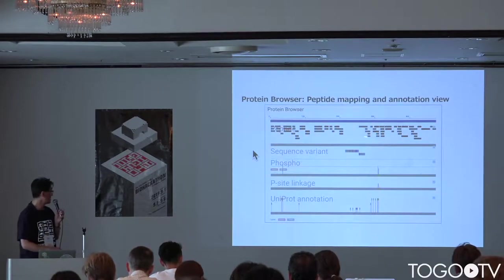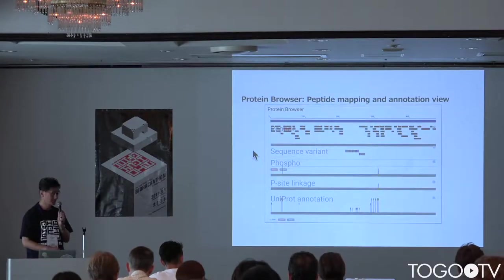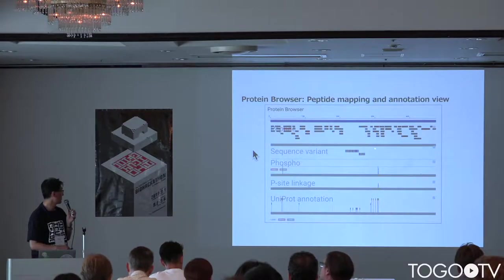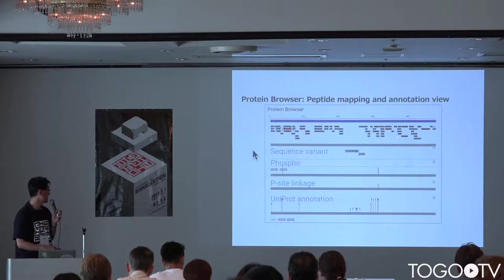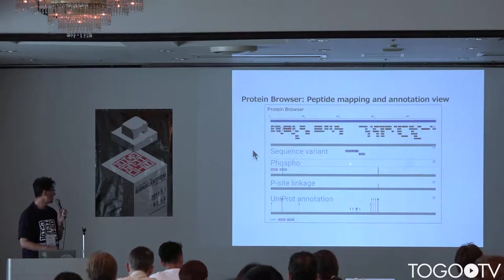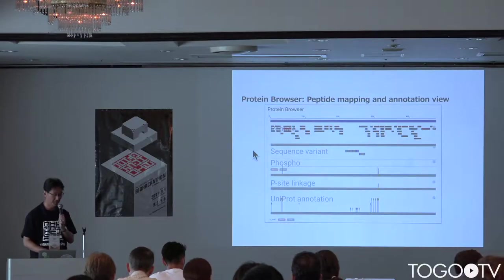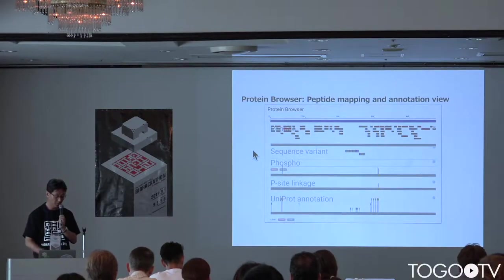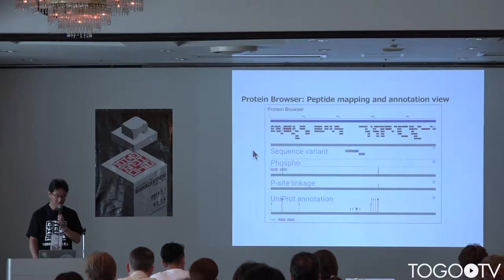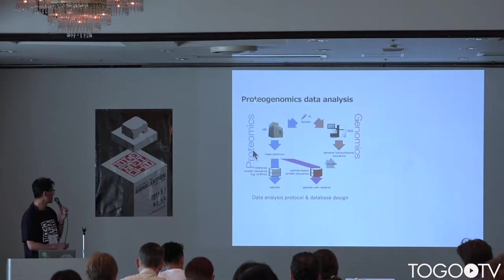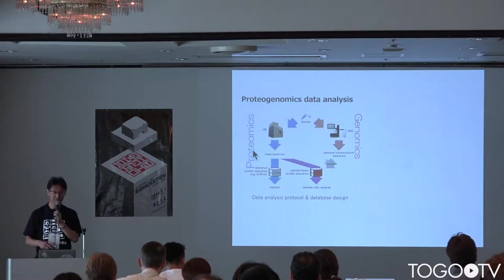Currently we are working on variation information mapping to the reference sequence. This is peptide mapping to the reference protein sequence. For disease samples, we sometimes have variation — point mutations or insertions — which are not in the reference protein sequence. So currently we are working on a visualization tool for mapping the peptide sequence with the variation.